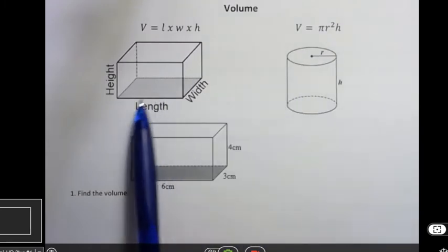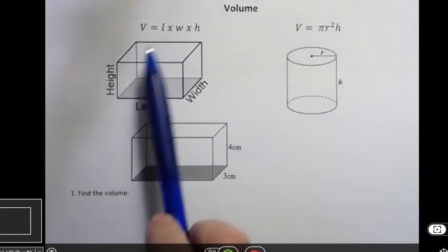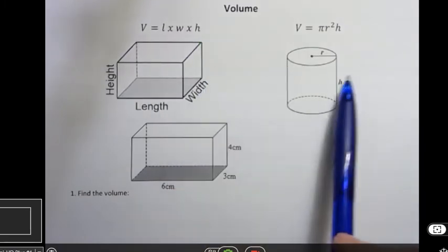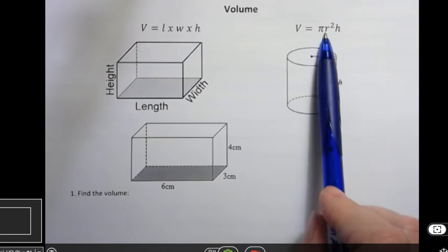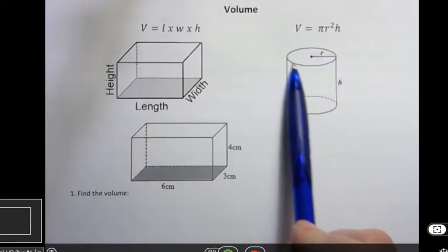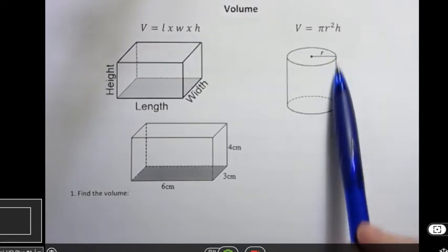So for a rectangular prism we have a width, a length, and a height, and that's just length times width times height. And for a cylinder we have pi r squared h. R is the radius, you can see the circle on the top there, the radius, and the h is the height.